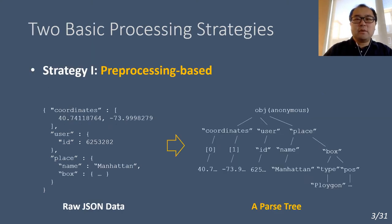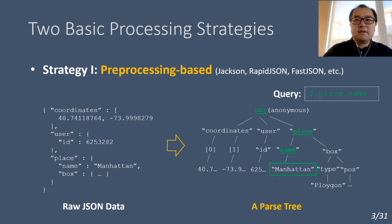In general, there are two basic strategies for processing JSON data. The first one is the pre-processing based strategy. One example is to first parse the raw JSON data into a parsing tree, which is stored inside the memory. Then, queries to the data can be evaluated by traversing this tree top-down until matches are formed. There are many popular JSON parsers developed for this purpose, such as Jackson, RapidJSON, and so on.